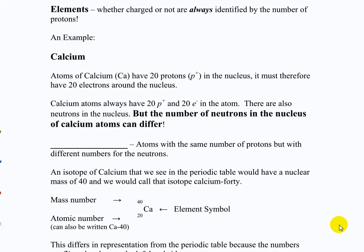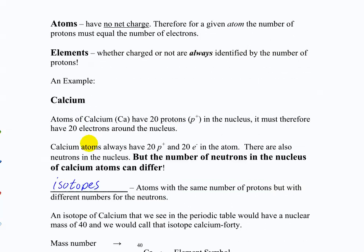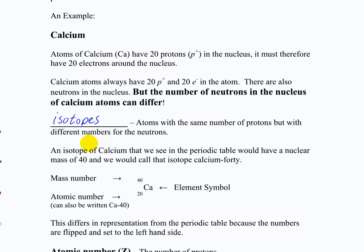Atoms with the same number of protons but different numbers of neutrons are called isotopes. To express that, we can write it two ways: with the atomic number on the bottom and the mass number on the top, or just with the mass number since having both the number and the element symbol is redundant. If it has 20 protons, it has to be calcium no matter what. So just having the 40 tells us there are 20 neutrons as well.